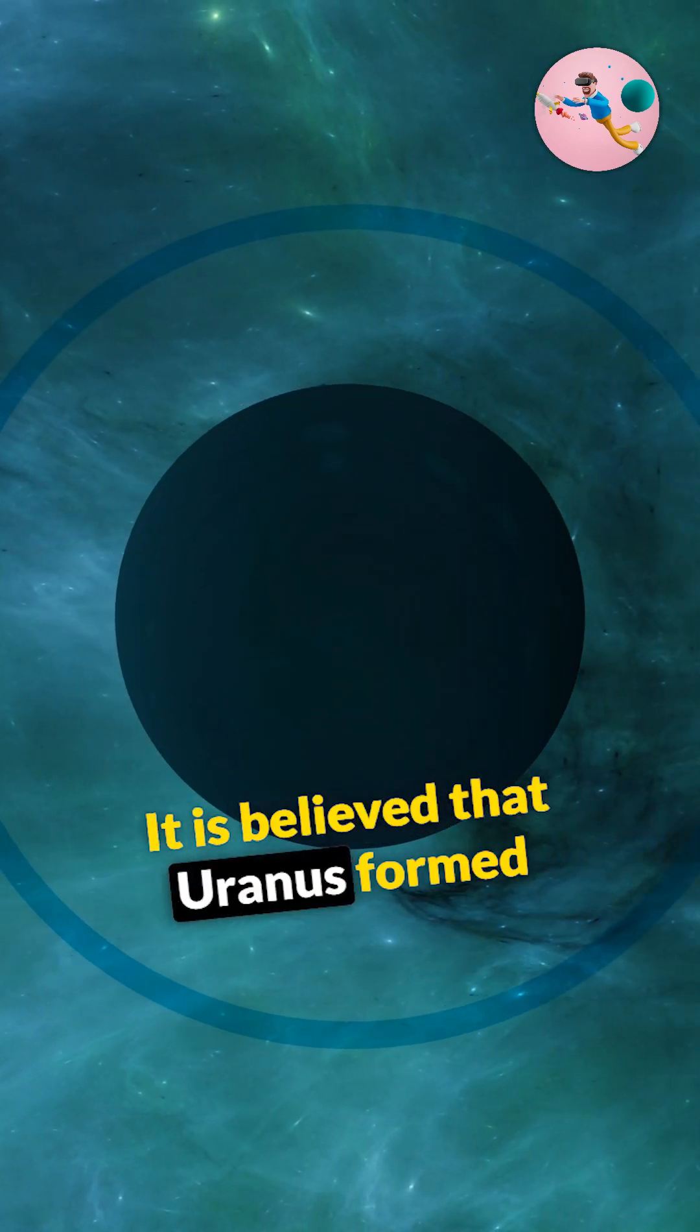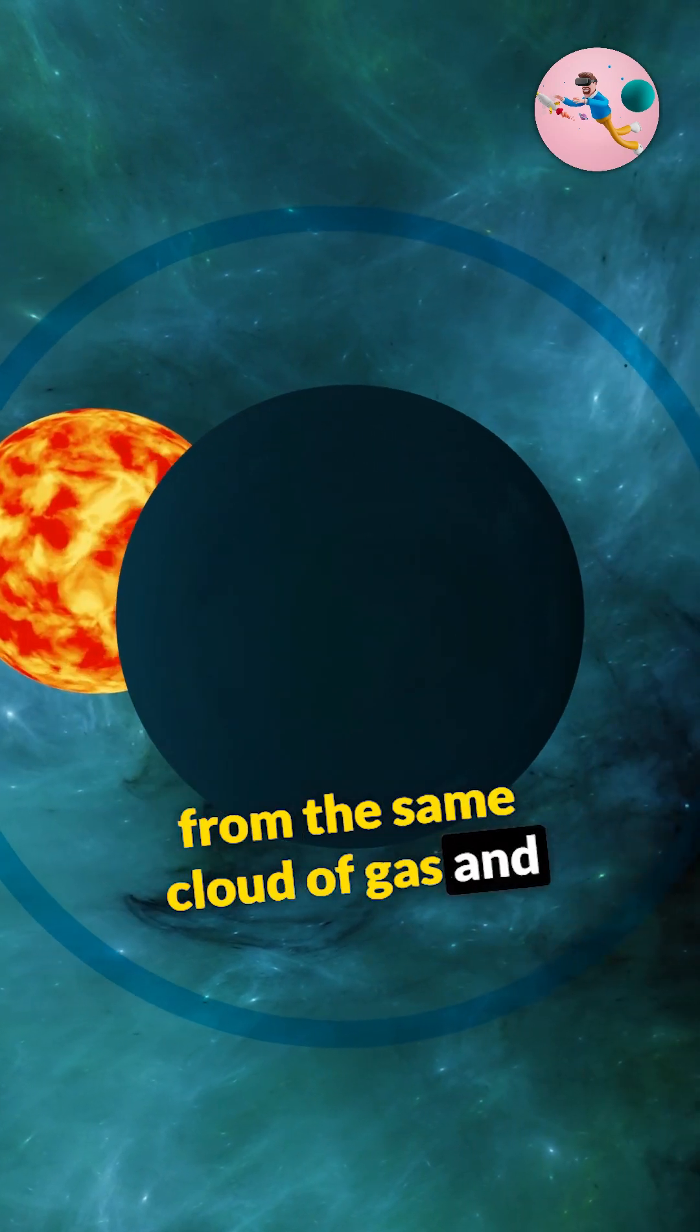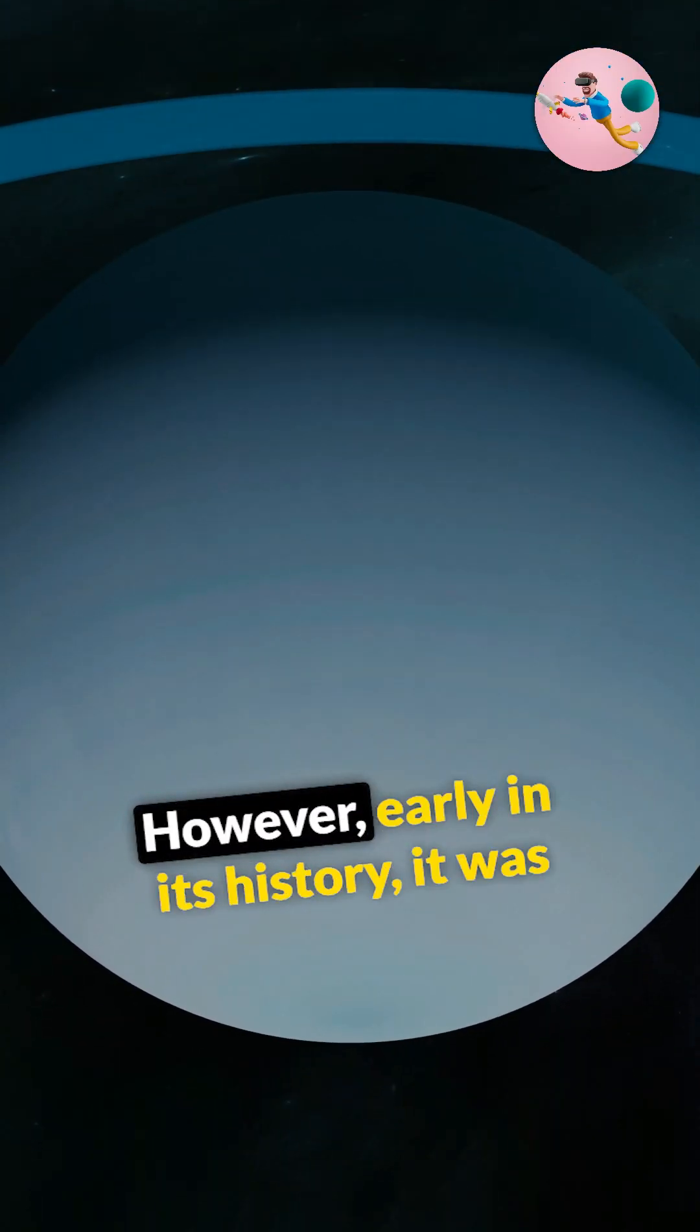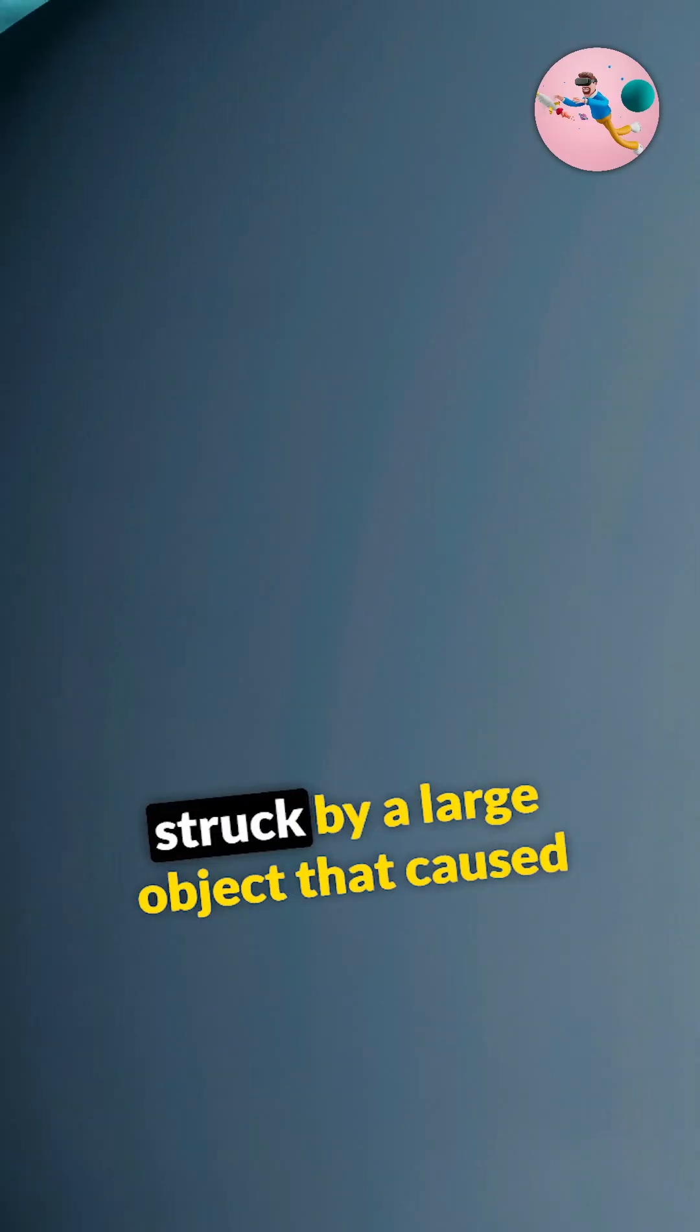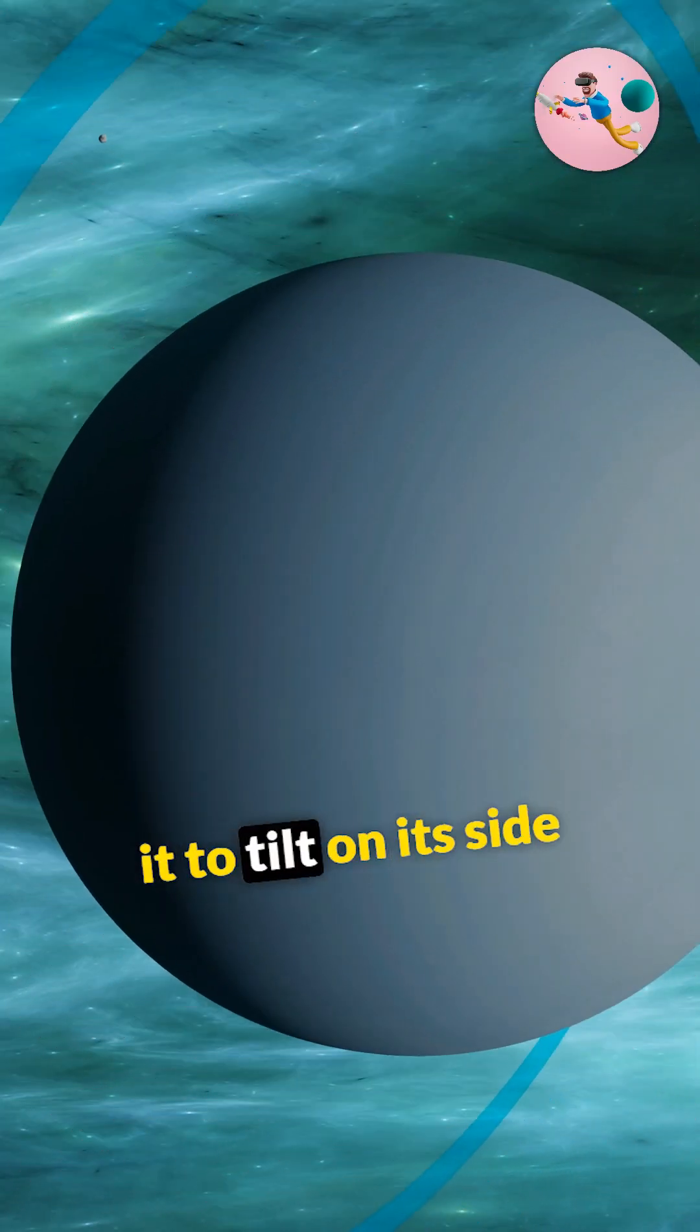It is believed that Uranus formed from the same cloud of gas and dust as the other planets in the solar system. However, early in its history, it was struck by a large object that caused it to tilt on its side.